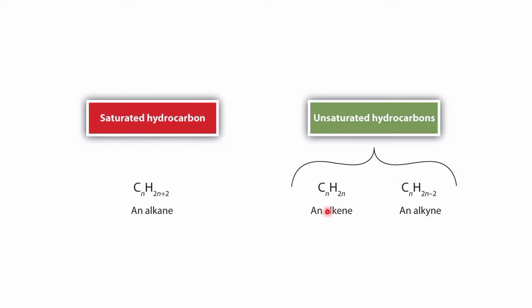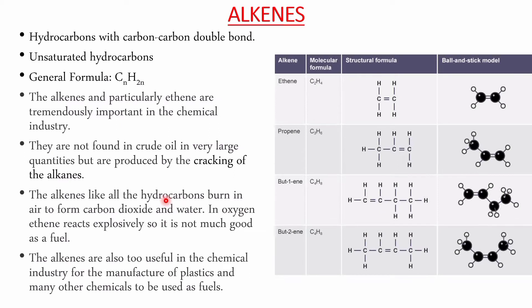The general formula of alkene is CnH2n, instead of CnH2n+2 for alkanes. Two hydrogens are eliminated to form a double bond. This makes them unsaturated hydrocarbons — unsaturation means the presence of multiple bonds. They are ready to add something else to their compound, which is why they are called unsaturated. They are hydrocarbons with a carbon-carbon double bond.